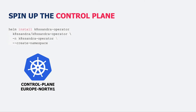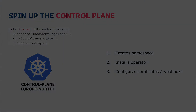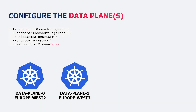From here we spin up the control plane using Helm. We specify our chart name, the release name, and so on. This creates the namespace, installs our operator, and configures certificates and webhooks. It's worth noting that we have a dependency on cert-manager here — it makes all the TLS bits a lot easier.